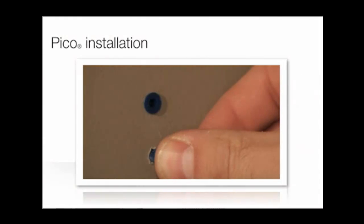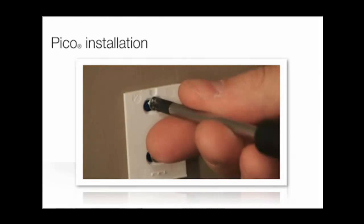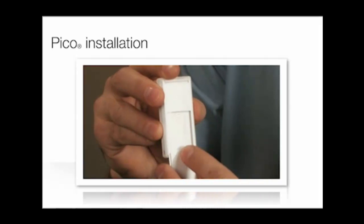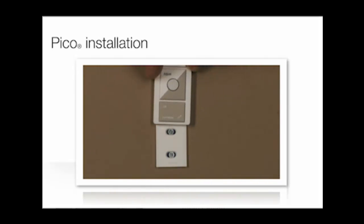Pico installation is as easy as sliding the Pico onto the faceplate adapter and snapping on the faceplate. The faceplate can be screwed directly into a wall, even if there is no backbox present.